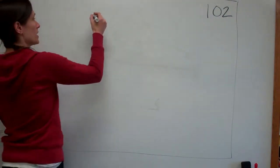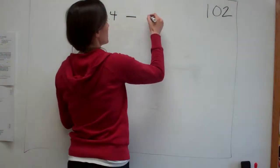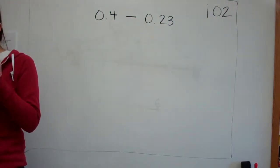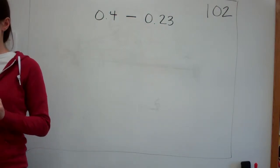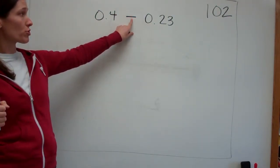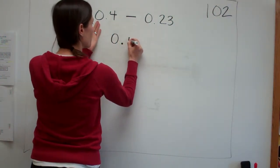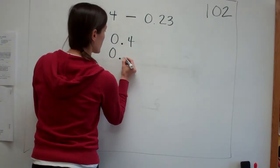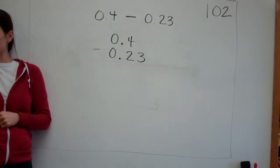If I tell you 0.4 minus 0.23, what's the most important thing that we understand about decimal numbers? Line them up. The most important thing you can remember when you're adding or subtracting decimal numbers. I'm going to take the 0.4 minus 0.23. What do I need to do?